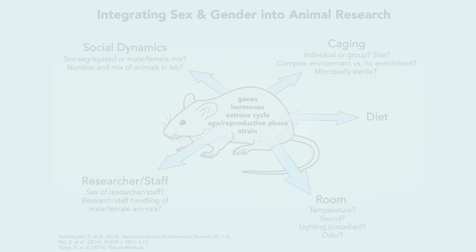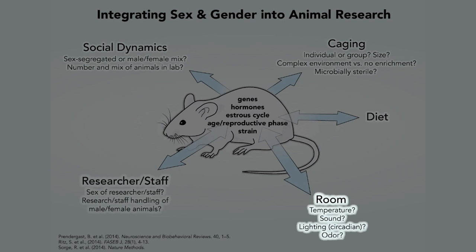Even animals may have gender. Behaviors might be directed by specific stimuli — by sight or smell — in interaction with the sex of the researcher. For example, gender, even in animals, can influence biological outcomes, as we have learned recently in pain research.